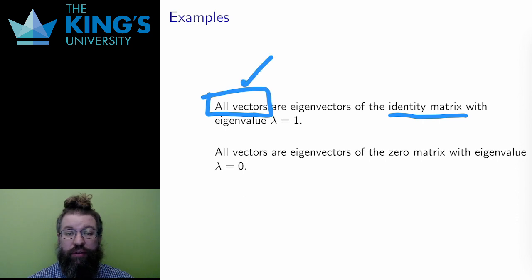every vector is an eigenvector of the identity with eigenvalue 1. Eigenvalue 1 means that the vector is sent to itself, since multiplication by 1 doesn't do anything.